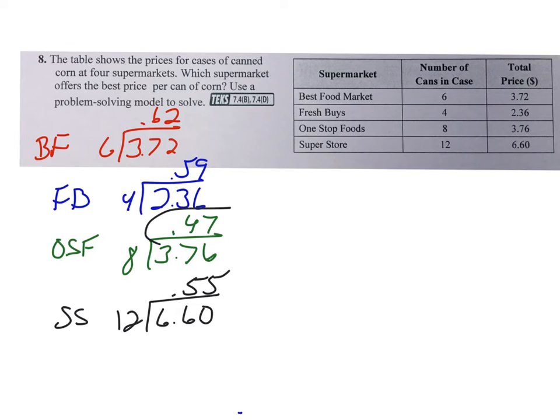So then the winner is the cheapest one, and you write out one-stop foods is the best buy.